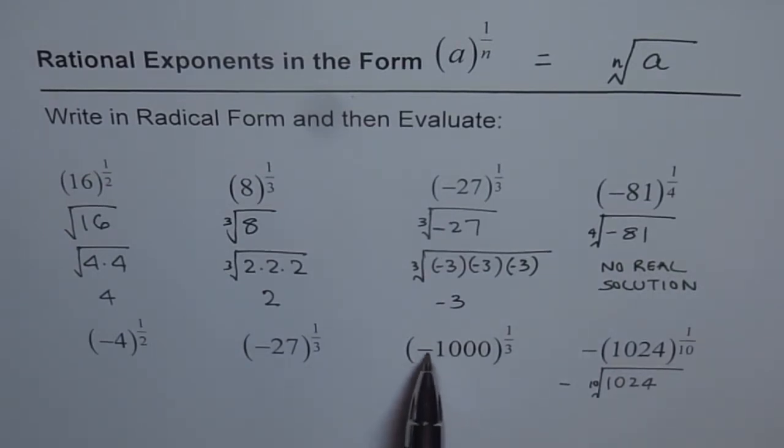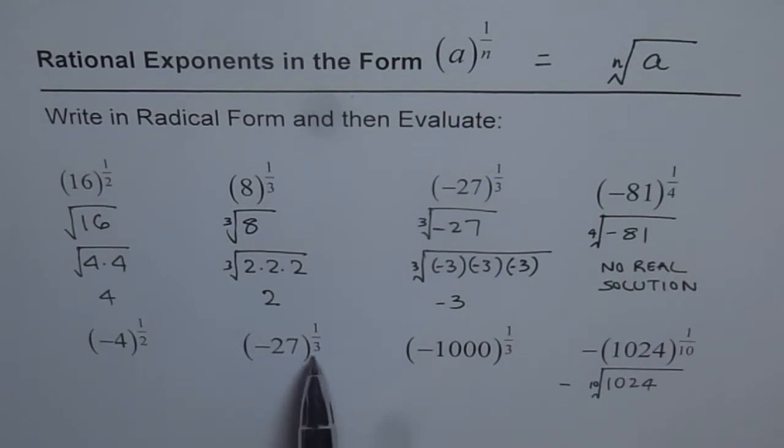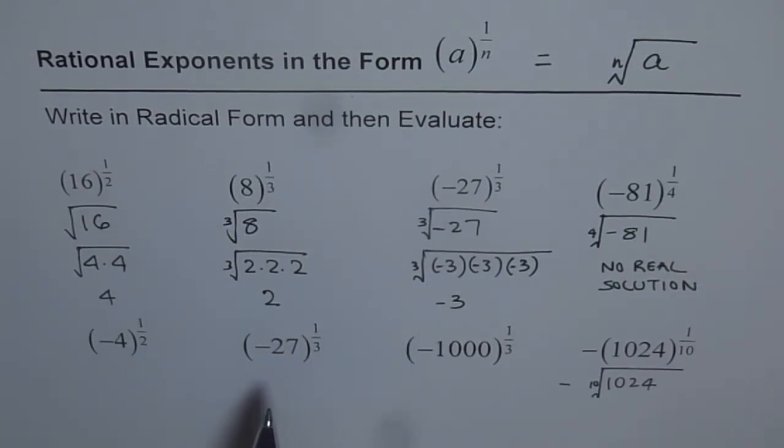Now, in this case, minus and this is odd power, so you should get an answer. Now here, 27 cube root. Since it is odd number for a negative number, we will get an answer. Here we have minus 4 to the power of half. Minus and this is even power, so you should not expect any real answer for this. In any case, try to do them all and see it for yourself. Do you understand the concept or not? Let's move on to another example. Thank you.